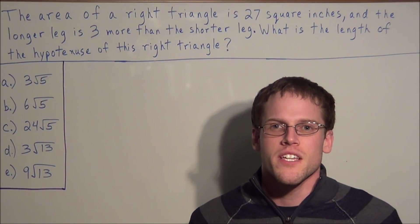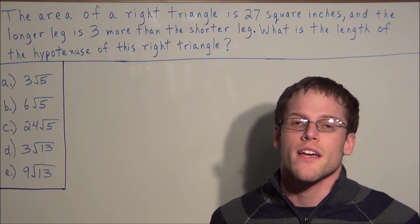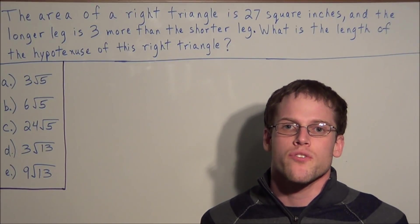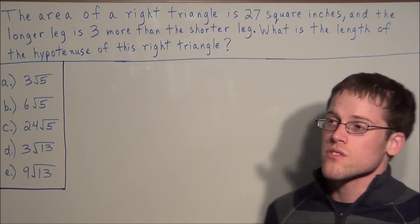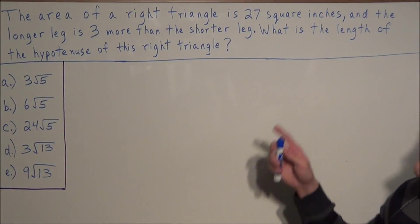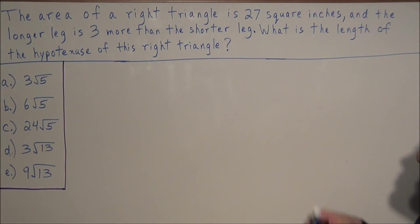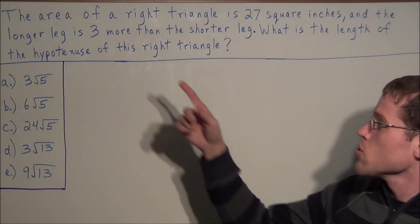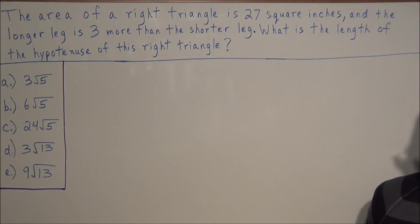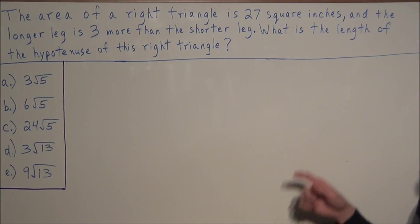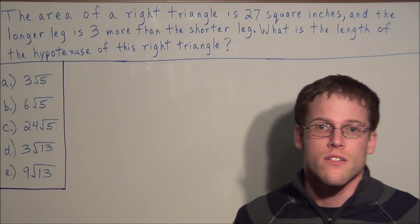Hi, my name is Mr. D and today I want to take a look at an SAT right triangle problem involving quadratic equations. We have the area of a right triangle is 27 square inches and the longer leg is three more than the shorter leg. We're trying to find what is the length of the hypotenuse of this right triangle.